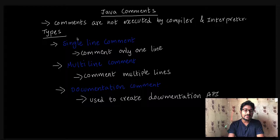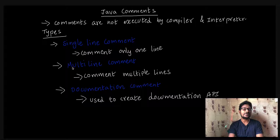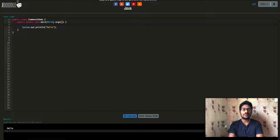What types of comments are there? There are three types: single line comment, multi-line comment, and documentation comment. Now, we will look at a sample program.